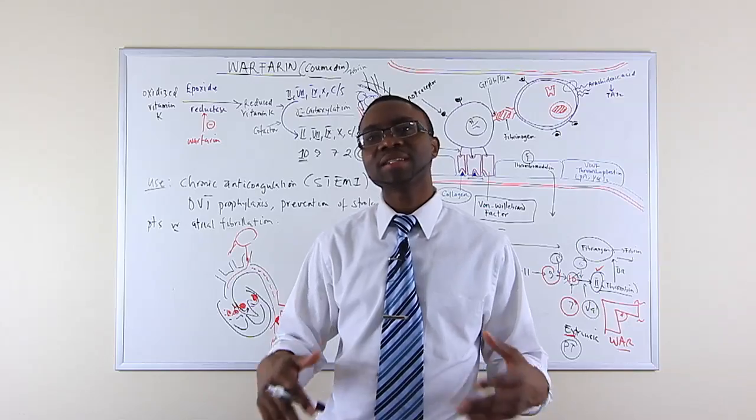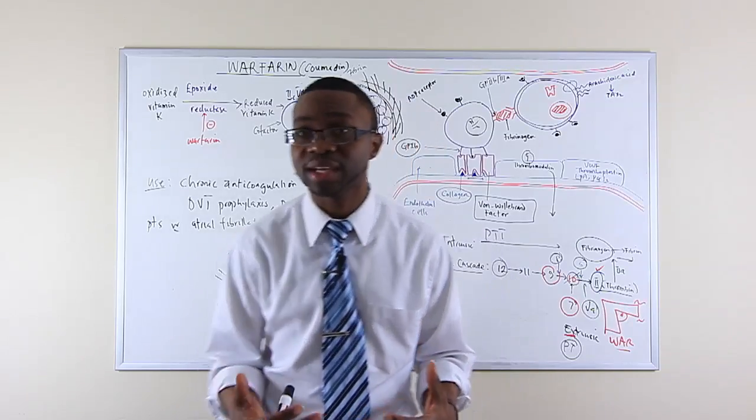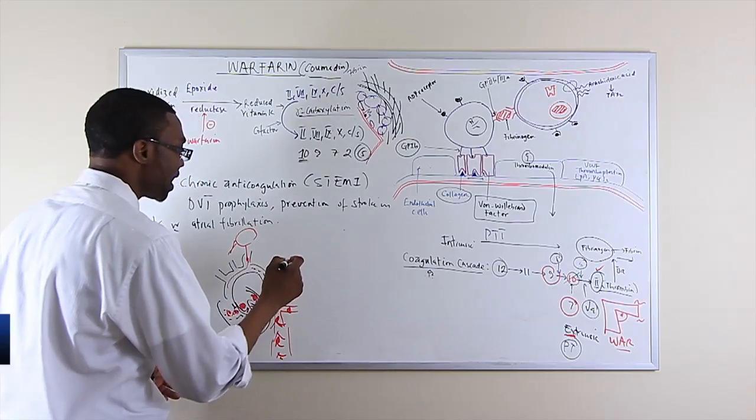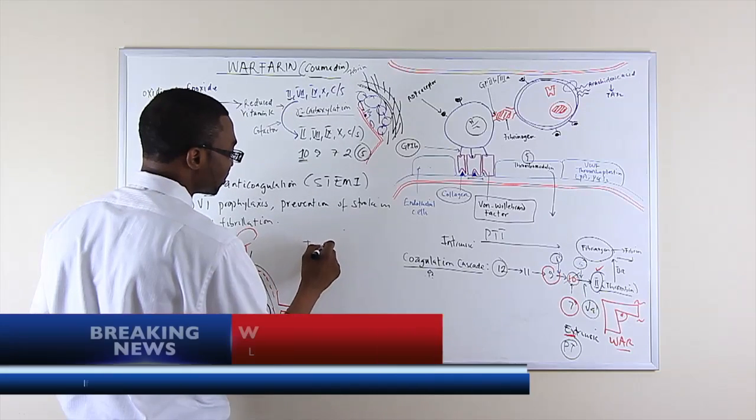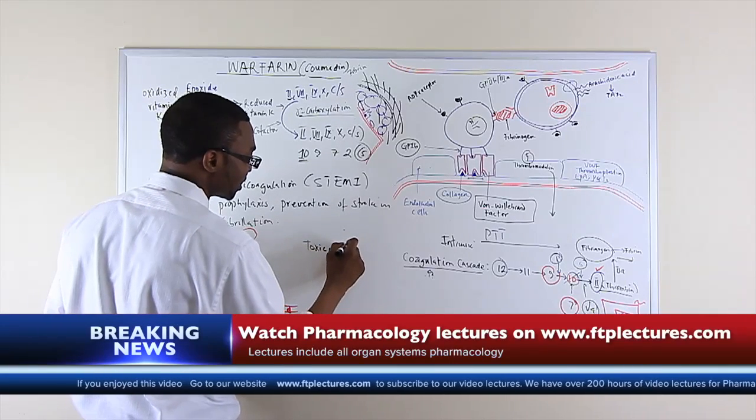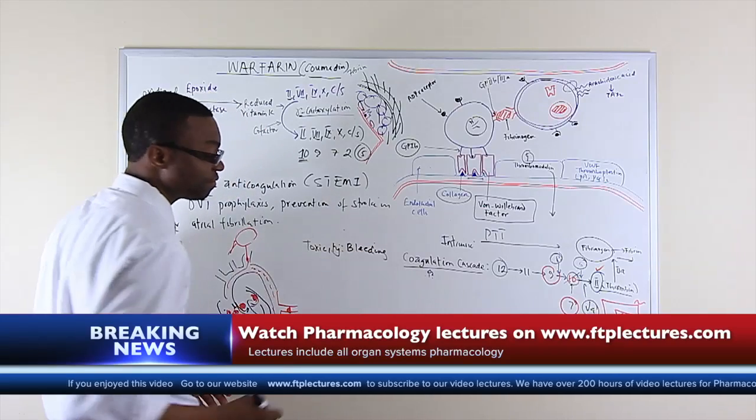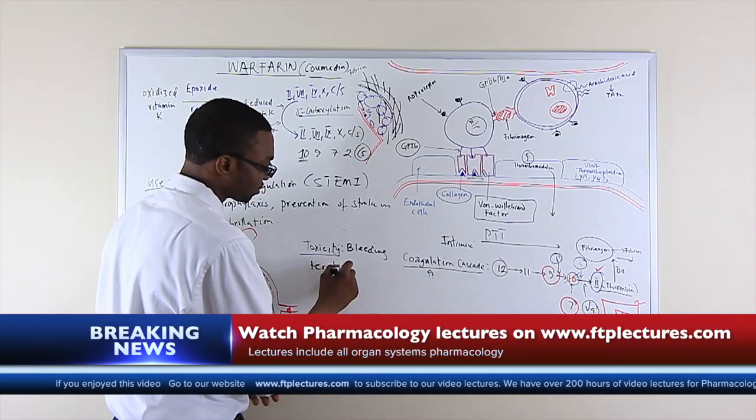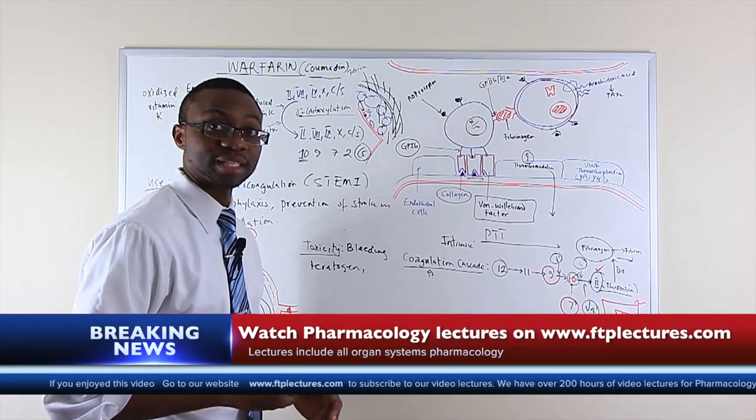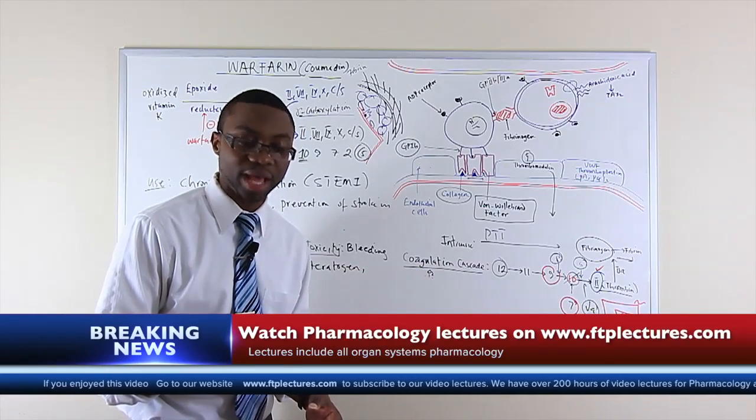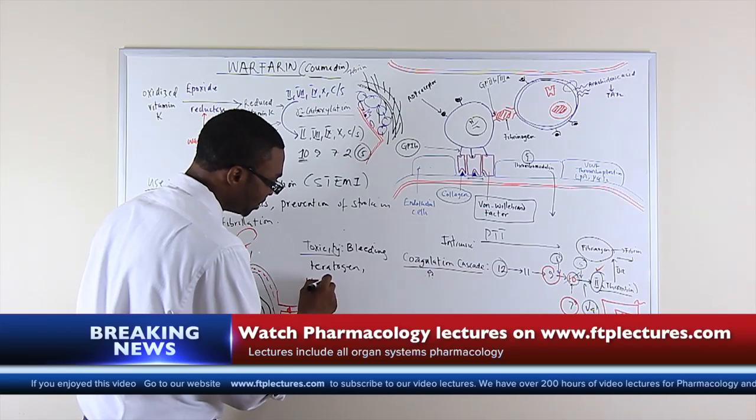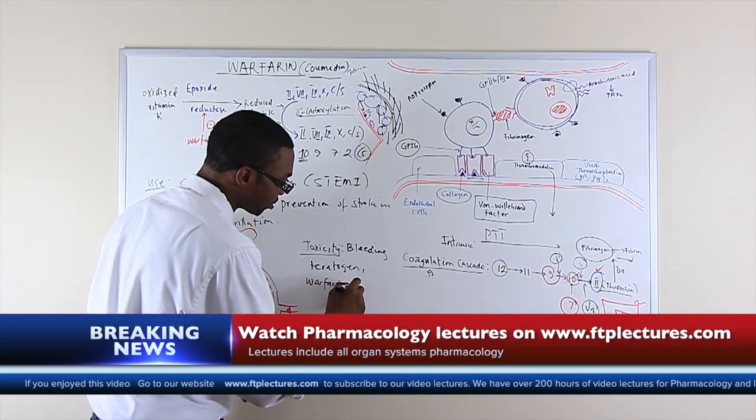So what are the complications of taking this drug? As great as a drug it is that saves lives, it also has complications. So the toxicity obviously is going to be bleeding because patients' blood are very, very thin. It's also a teratogen because it can cross the placenta and damage the baby. You don't want to do that. And it can cause warfarin-induced skin necrosis.